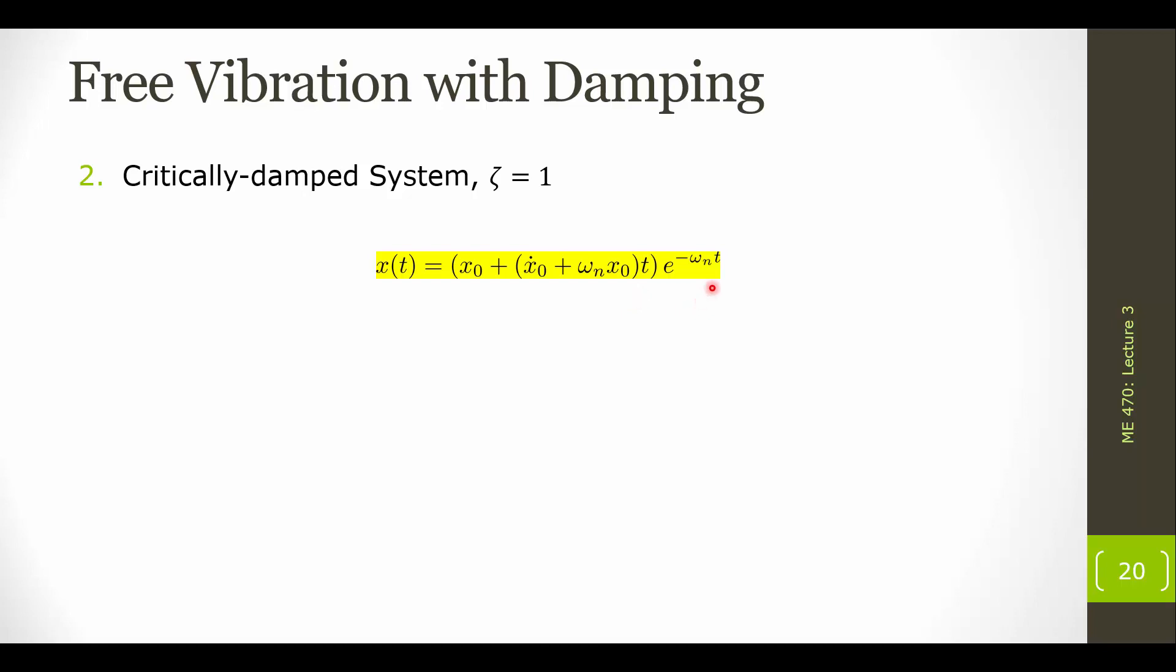And because we have just an exponential here, we do not have trig functions, we don't have a sine or a cosine, we will not see oscillations in this system. In contrast to what we saw for the underdamped system that had a cosine term, which gave us oscillations, and an exponential, which provided the decay.